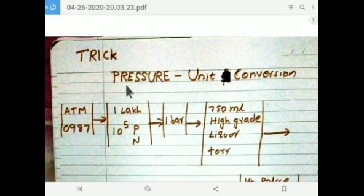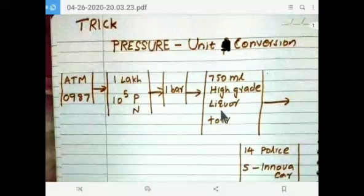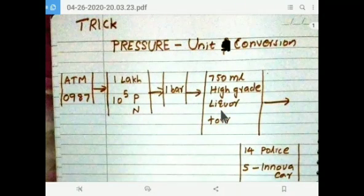See, the unit conversion of pressure will confuse us sometimes. You know, pressure has many units: ATM, Pascal, Newton per meter square, bar, millimeter of Hg, Tor, then pound per square inch.